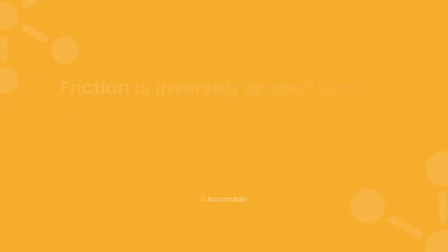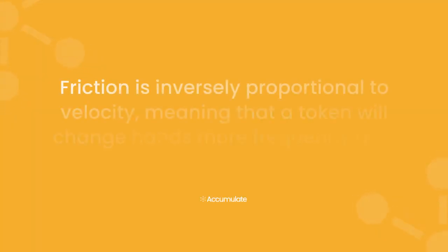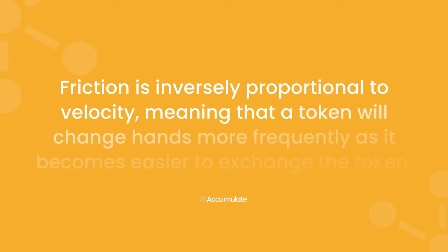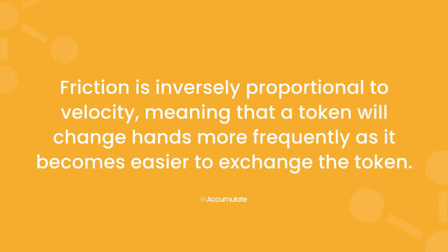Friction is inversely proportional to velocity, which means that a token will change hands more frequently as it becomes easier to exchange. And finally, because there's no incentive to hold the token and a strong salient pressure to get rid of it as soon as possible, tokens that have a high velocity tend to lose their value over time.